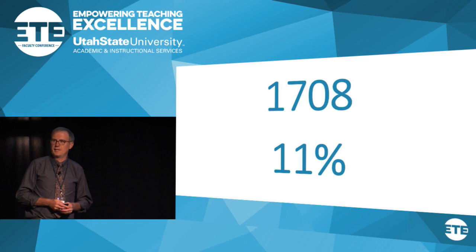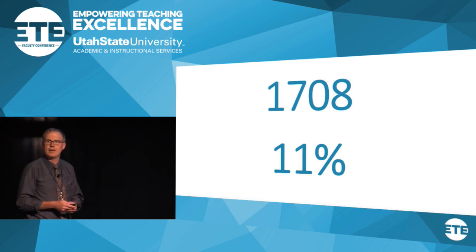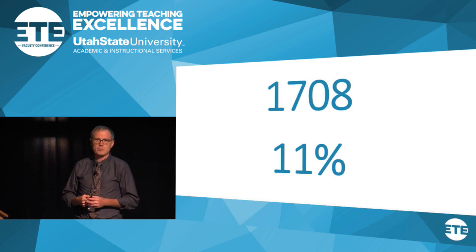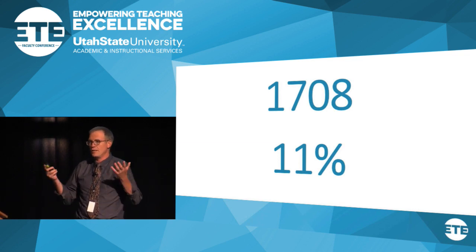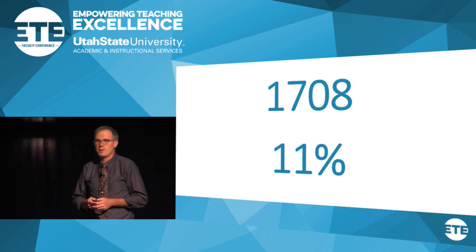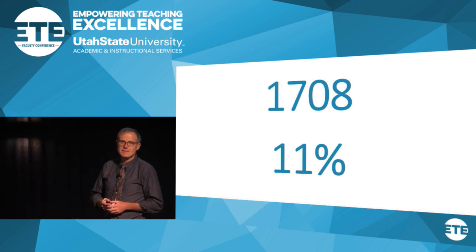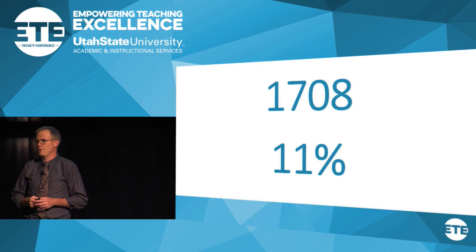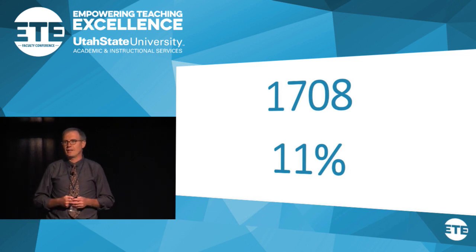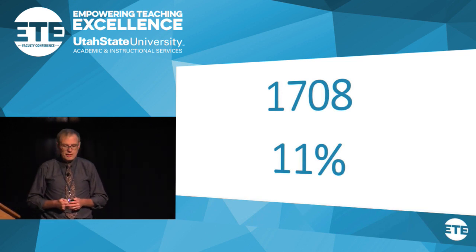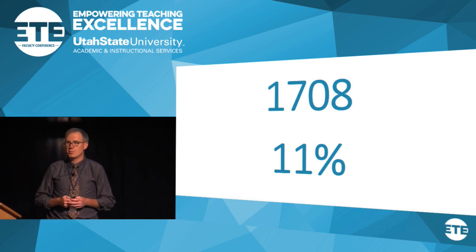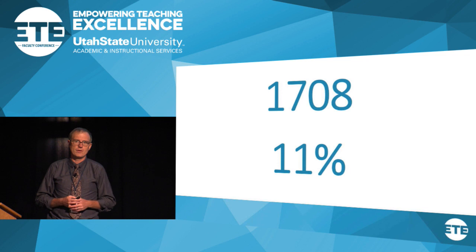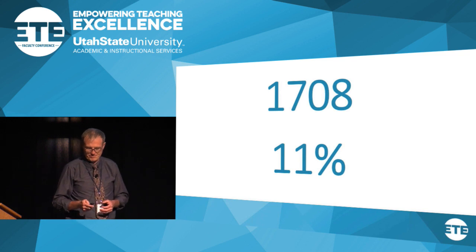A couple of numbers to be aware of as we get started — this will hopefully help you feel good about being here. There is a Disability Resource Center on campus where students with disabilities can register if they have a disability and need accommodations. Not all students with disabilities do, but many of them do. Last year, just over 1,700 students registered with the Disability Resource Center to get the accommodations that they need. A general statistic often used is about 11% of students are going to have some disability, though not all of them will register or let you know about that.